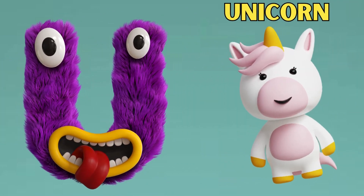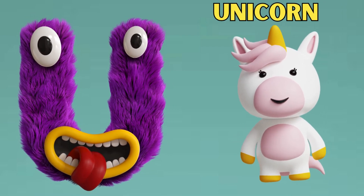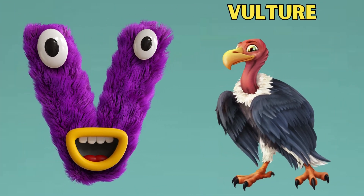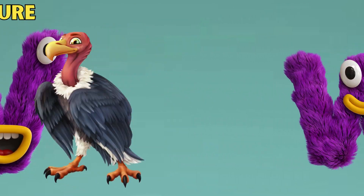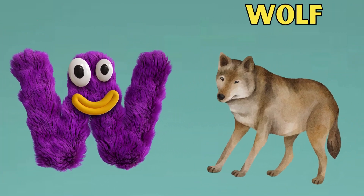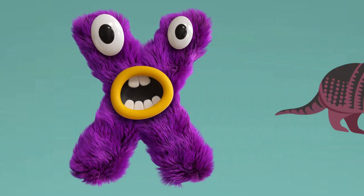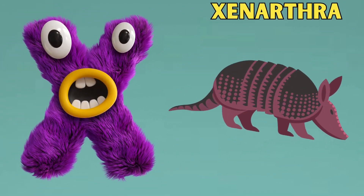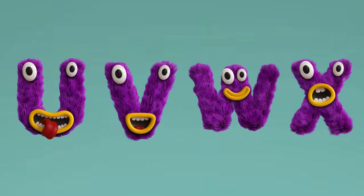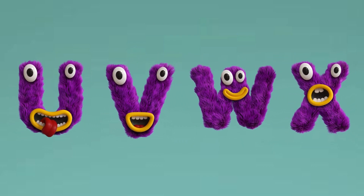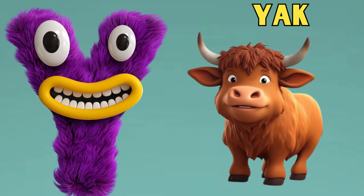U is for Unicorn. U, U. Unicorn. V is for Vulture. V, V. Vulture. W is for Wolf. W, W. Wolf. X is for Xenartha. X, X. Xenartha.